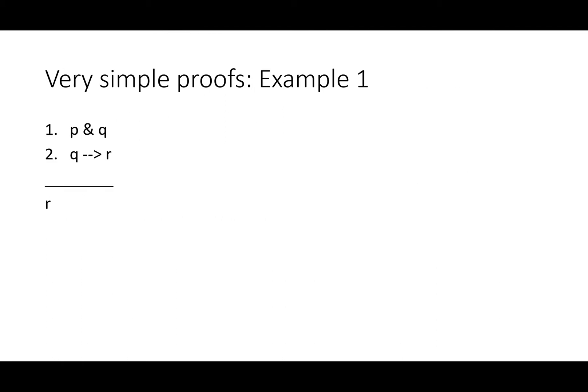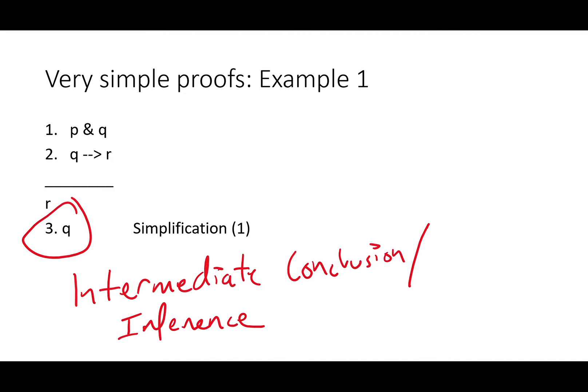Here's a pretty simple looking argument. Here's the premises, p and q, and if q then r. And here's our conclusion, r. That bar stands for therefore. So here's our first line. q is our intermediate conclusion. It's our inference. It's the thing we claim to have proved true.